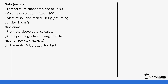The temperature change was 14 degrees Celsius, and since it rises it tells you that this is an exothermic reaction. The volume of the solution is 100 cm³, coming from 50 cm³ of nitrate plus 50 cm³ of chloride.